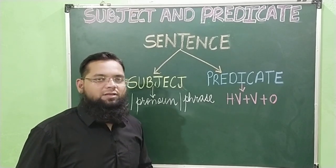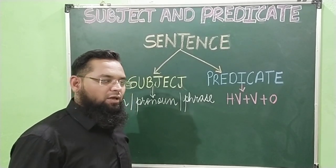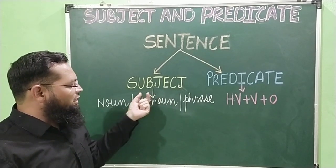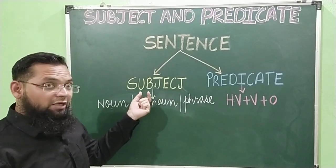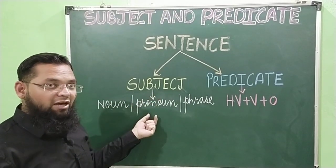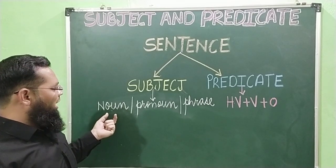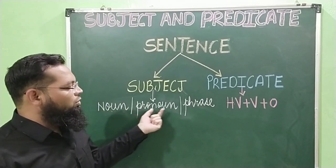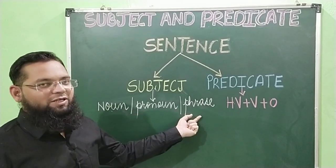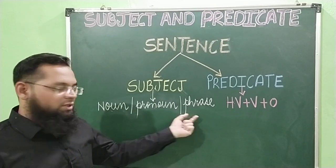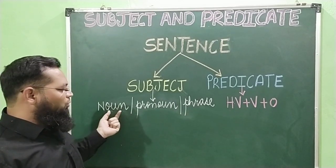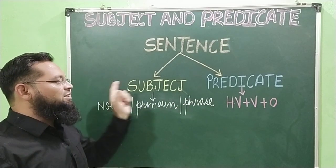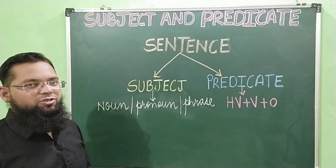Just now we had discussed the definition of a subject. So what does a subject have? A subject may have a noun, a pronoun, or a phrase. Subject में noun, pronoun, या फिर phrase हो सकता है. This part of the sentence will be called the subject.